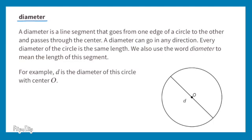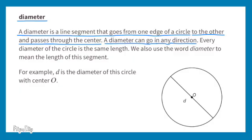Diameter. A diameter is a line segment that goes from one edge of a circle to the other and passes through the center. A diameter can go in any direction. Every diameter of the circle is the same length.